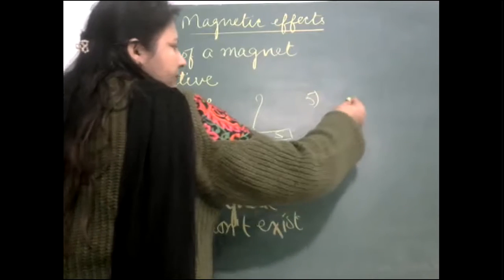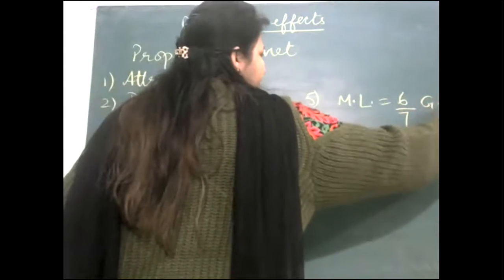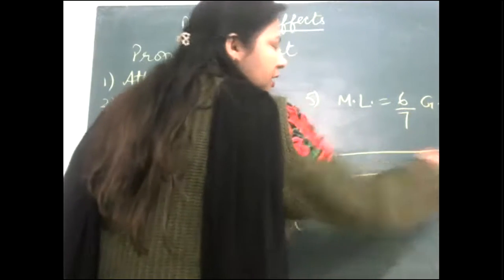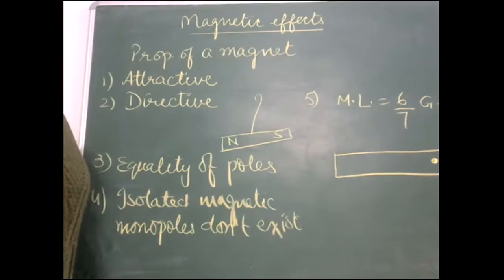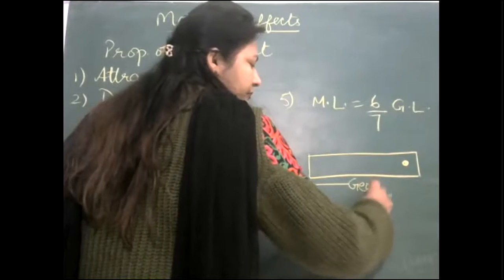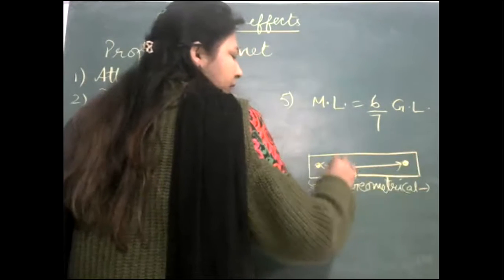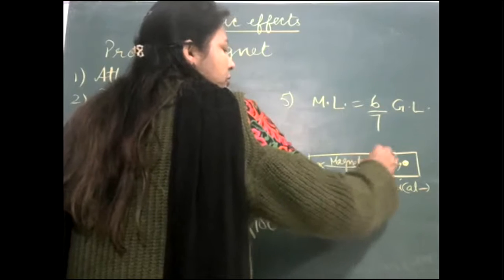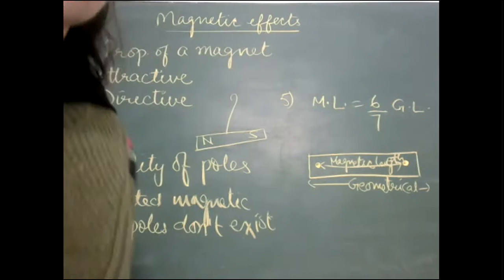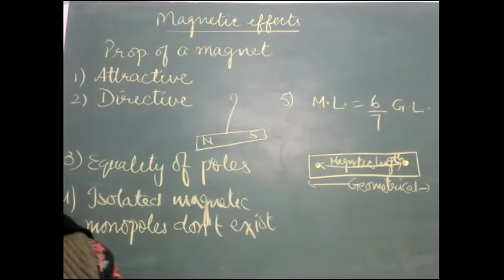Another property: magnetic length is smaller than geometrical length of the magnet. The magnetic poles are located inward from the ends, so the magnetic length — the distance between the two poles — is less than the full geometrical length of the magnet. Magnetic length is always smaller than geometrical length; it is about 6/7 times the geometrical length.